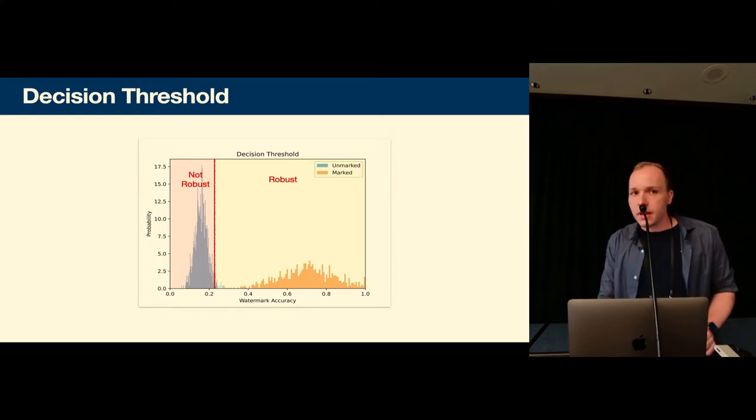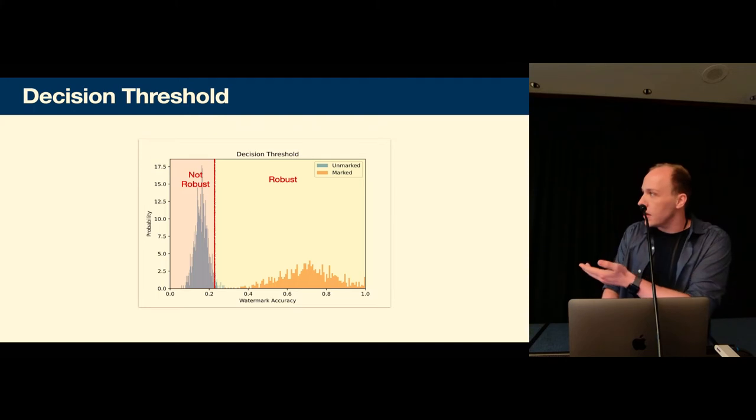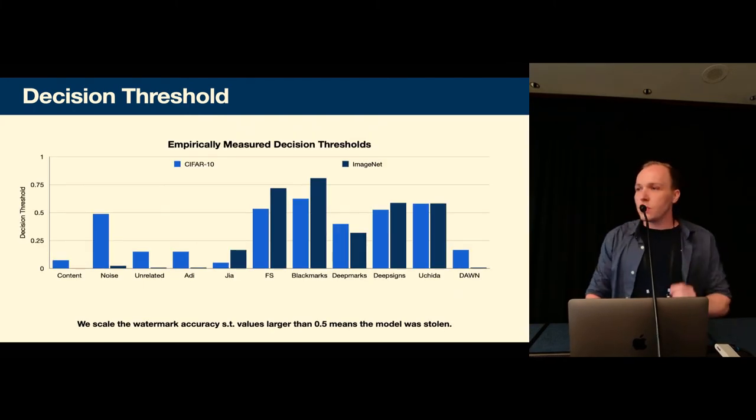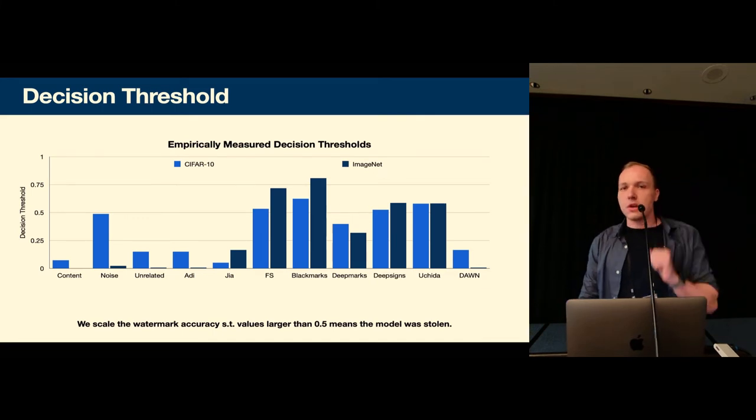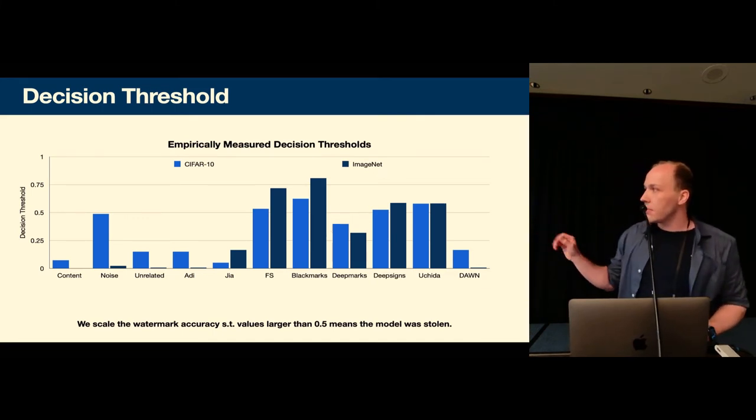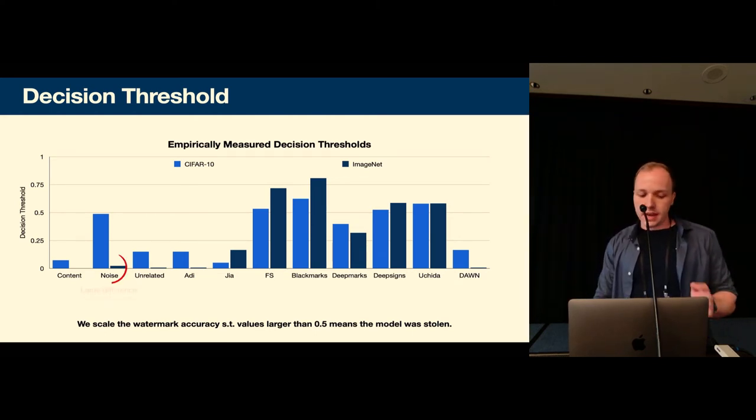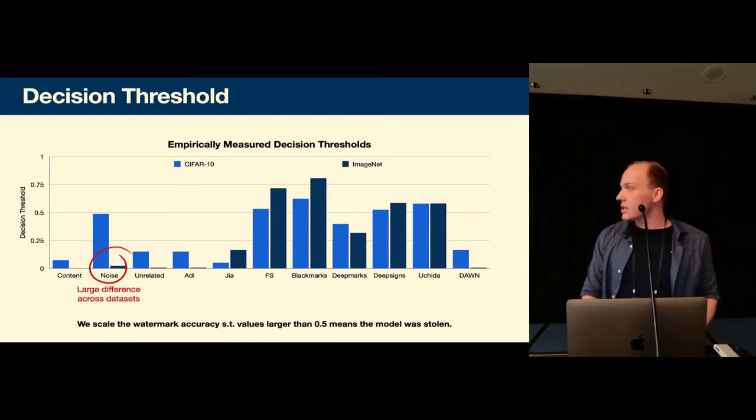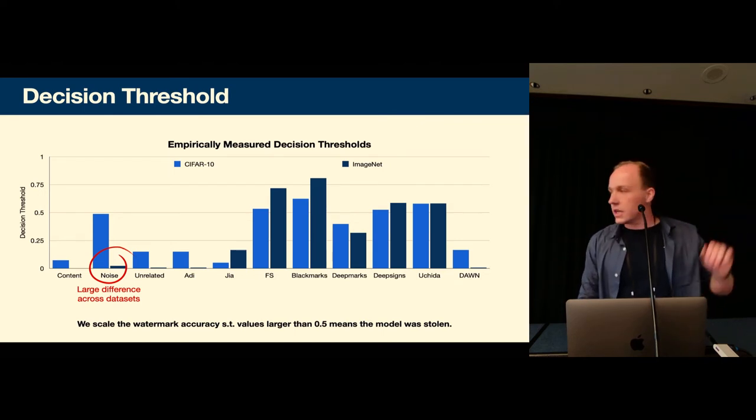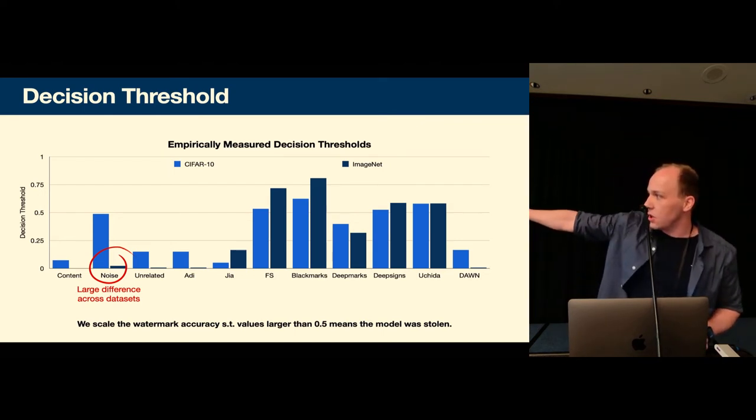And many schemes that we evaluated they didn't give a method to evaluate or to determine the decision threshold. So what we do is we created a generic method where we train a lot of unmarked models and then empirically measure the decision thresholds. And what we find is that there's large differences across data sets for a single scheme. So on the x-axis we see all the schemes, the 11 schemes that we look at. And also between schemes we also see large differences.